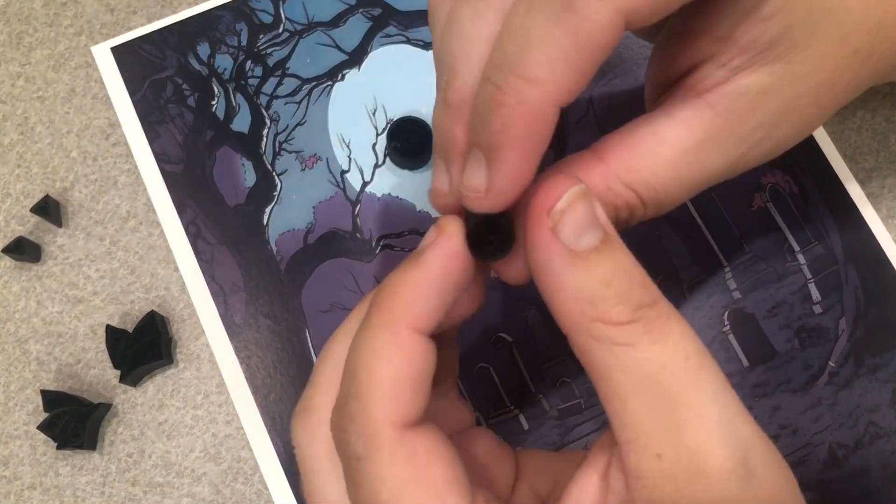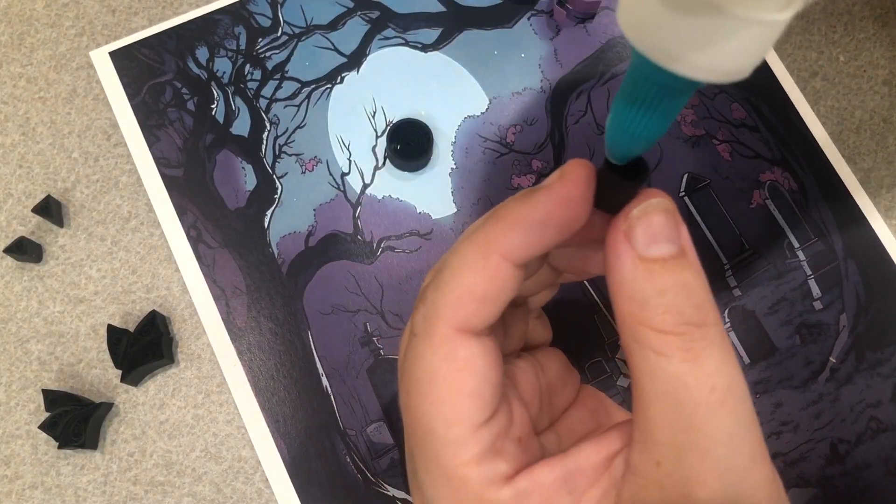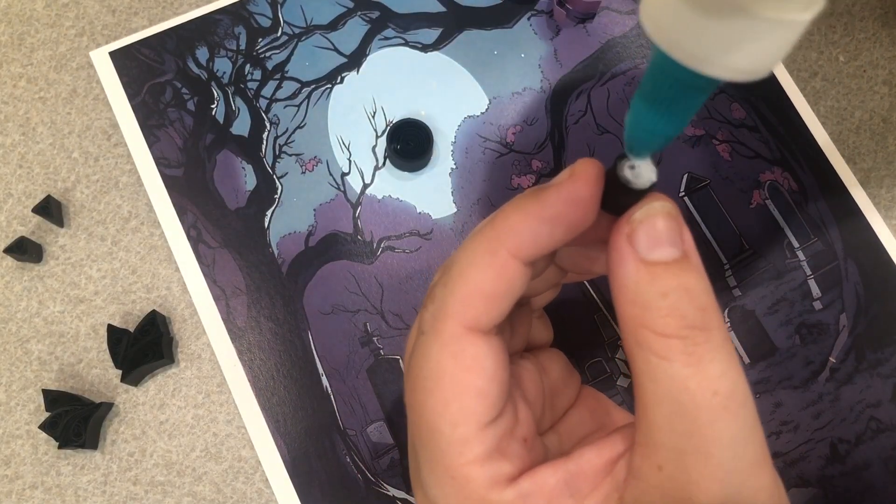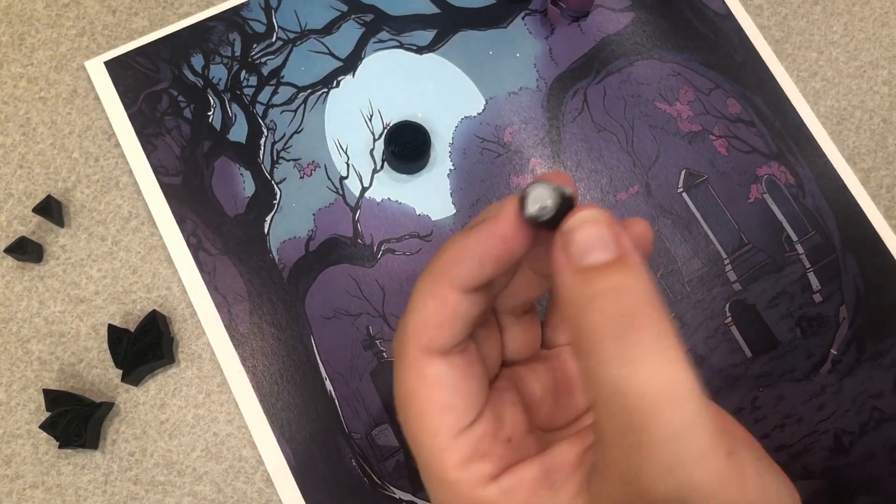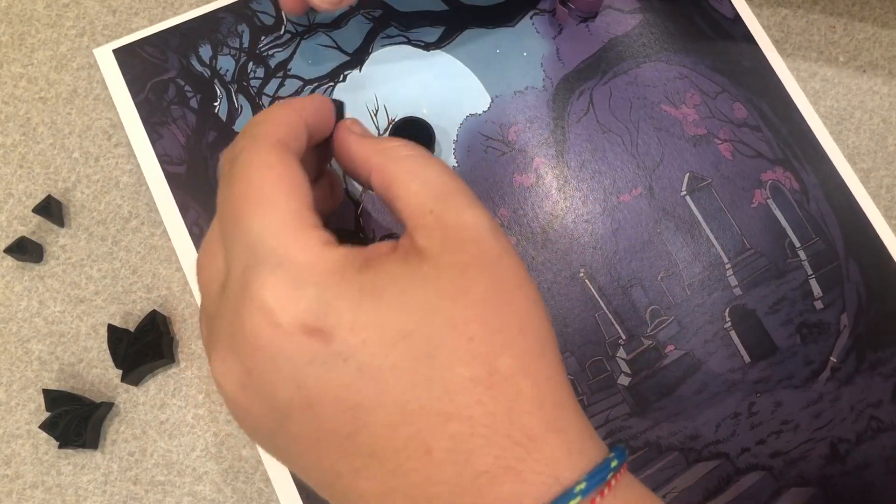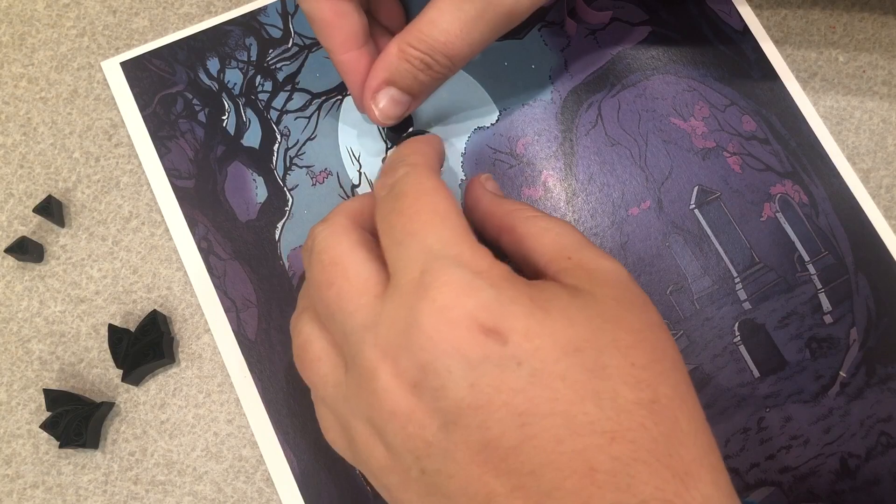Then I'm going to take my bat's head, put some glue on the back of that and also on just one little strip of glue where it's going to connect to the body to give it a little more stability there.